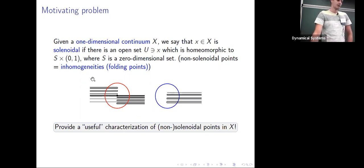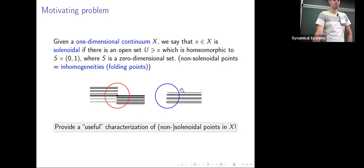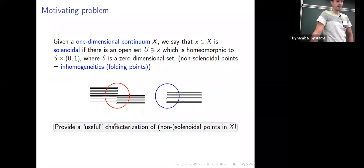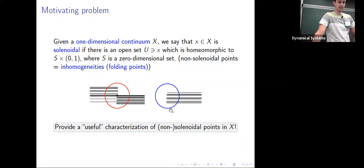On the left part of the picture I call these inhomogeneities or non-solenoidal points. These are non-solenoidal points as well, but if I choose a neighborhood of a point somewhere here, that would be a solenoidal point for me. We will see what I mean by a useful characterization a bit later in the talk.